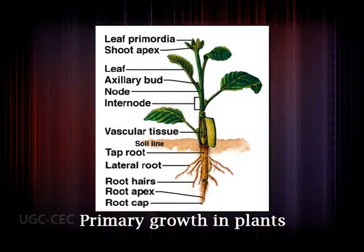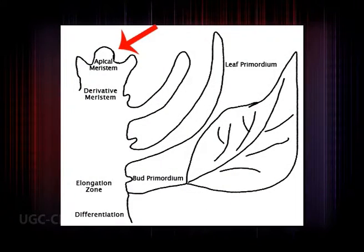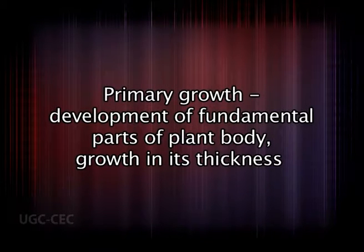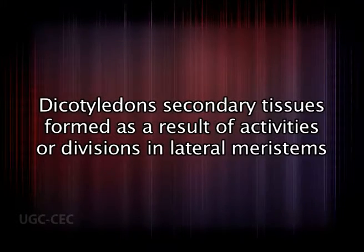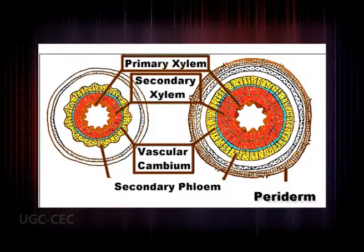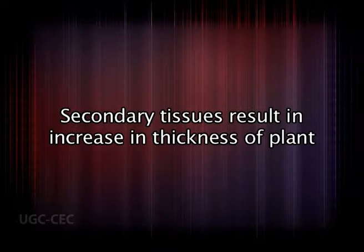Xylem and phloem form structurally and functionally complex tissues continuous throughout the plant body. Primary and secondary growth play important roles in establishing the basic body plan. The primary body results from continuous divisions in the apical meristem, responsible for development of fundamental plant parts and some growth in thickness. Primary growth is completed within a few weeks in the first year. In lower vascular plants like pteridophytes, and in monocots with few exceptions, this primary structure persists throughout the life of the plant.